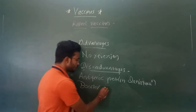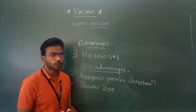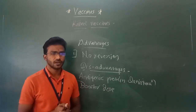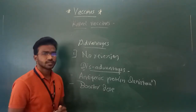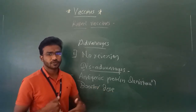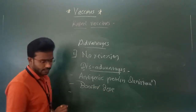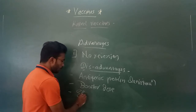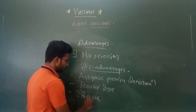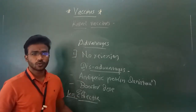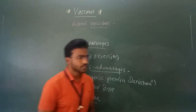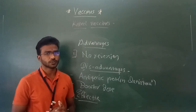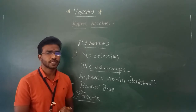The second disadvantage is that booster doses are frequently required. In live attenuated vaccines, booster doses are rarely required because they induce stronger immunity. But with killed vaccines, booster doses are frequently required. A third disadvantage is that killed vaccines are less effective at inducing cell-mediated immune response compared to live attenuated vaccines; they cannot induce CMI — cell-mediated immunity — to the same extent.